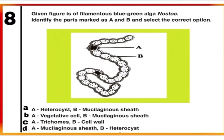Question 8: The given figure is of filamentous blue-green alga Nostoc. Identify the parts marked as A and B and select the correct option. Part A in the figure is heterocyst, which helps in fixing nitrogen. B is the mucilaginous sheath which covers and protects the cells from disruptions. Correct option is A. Mark A.